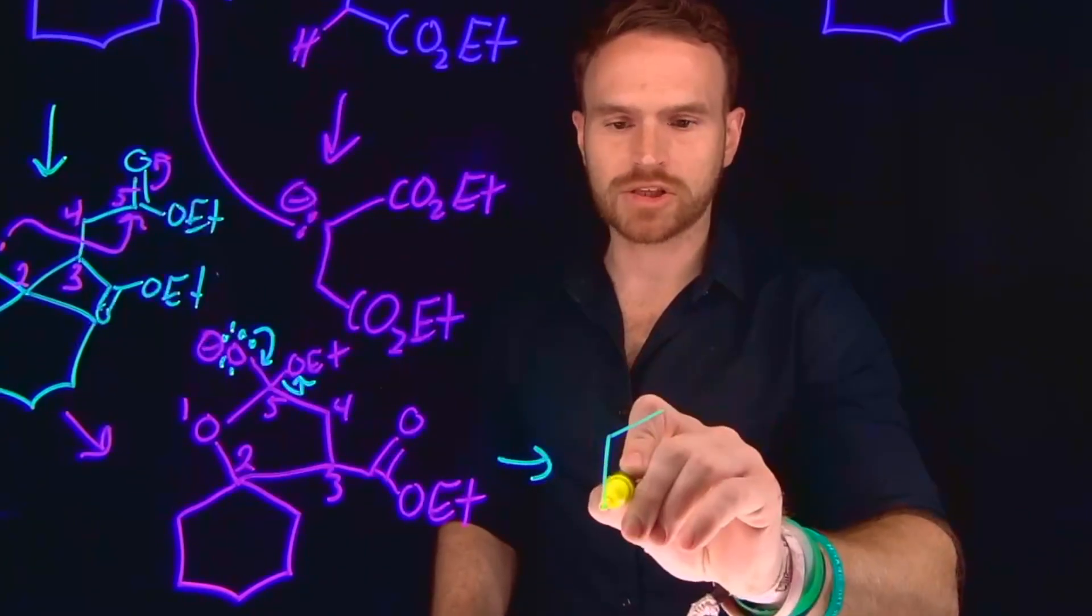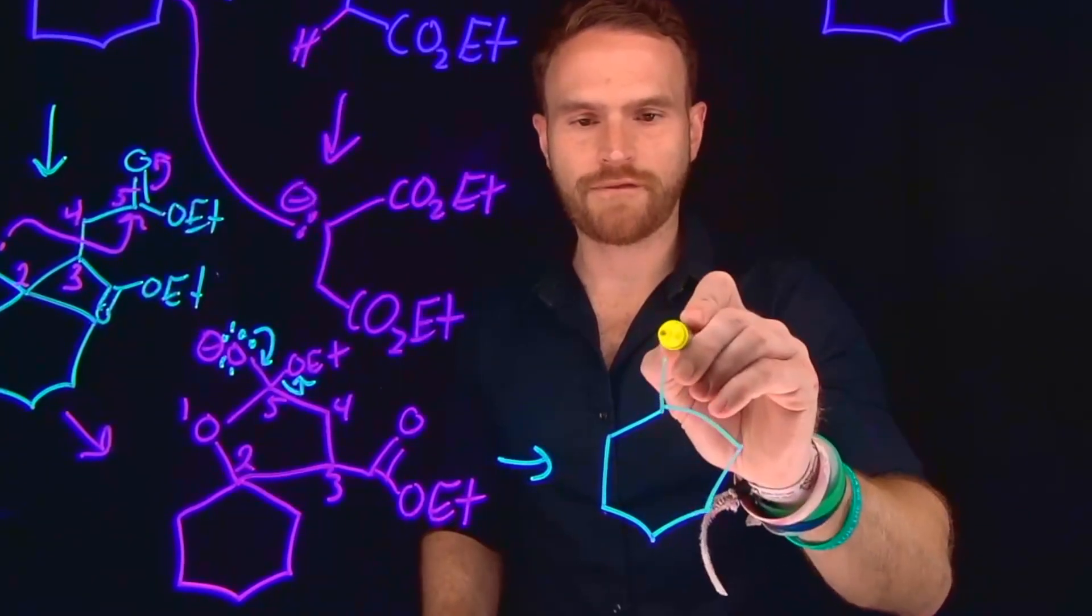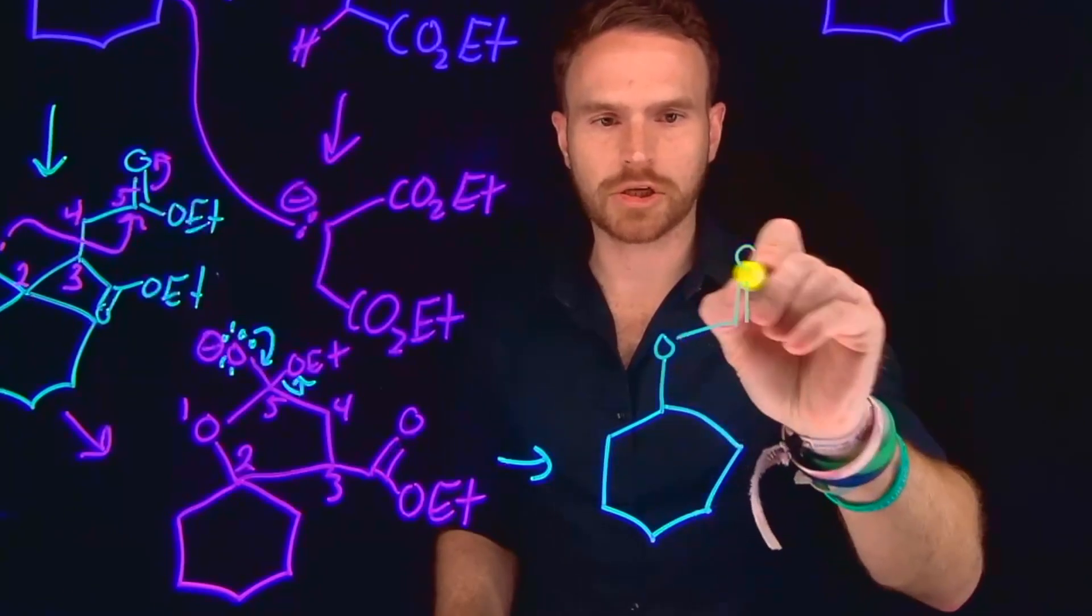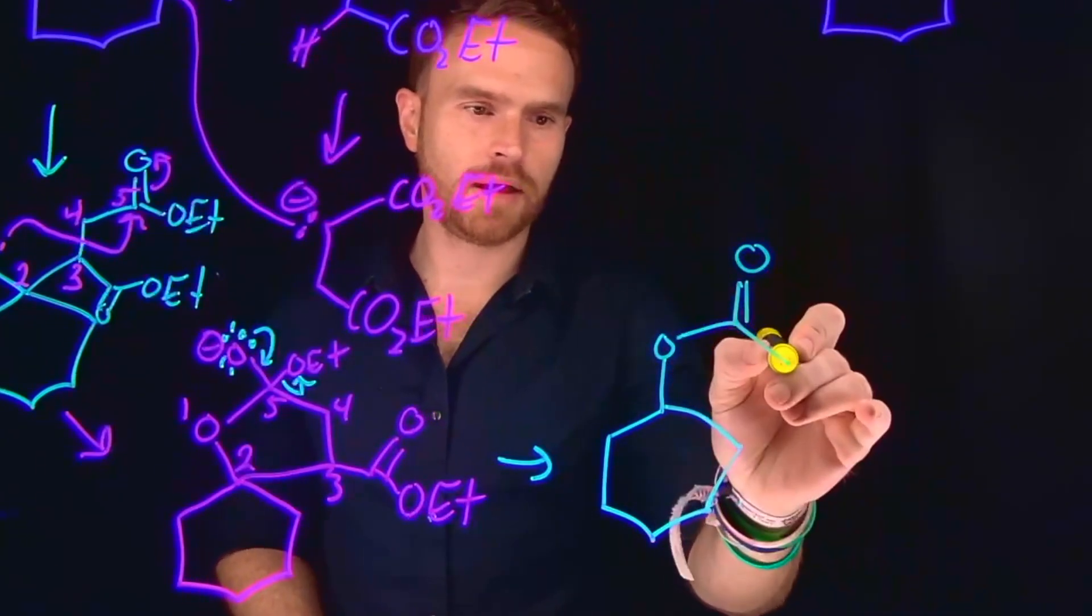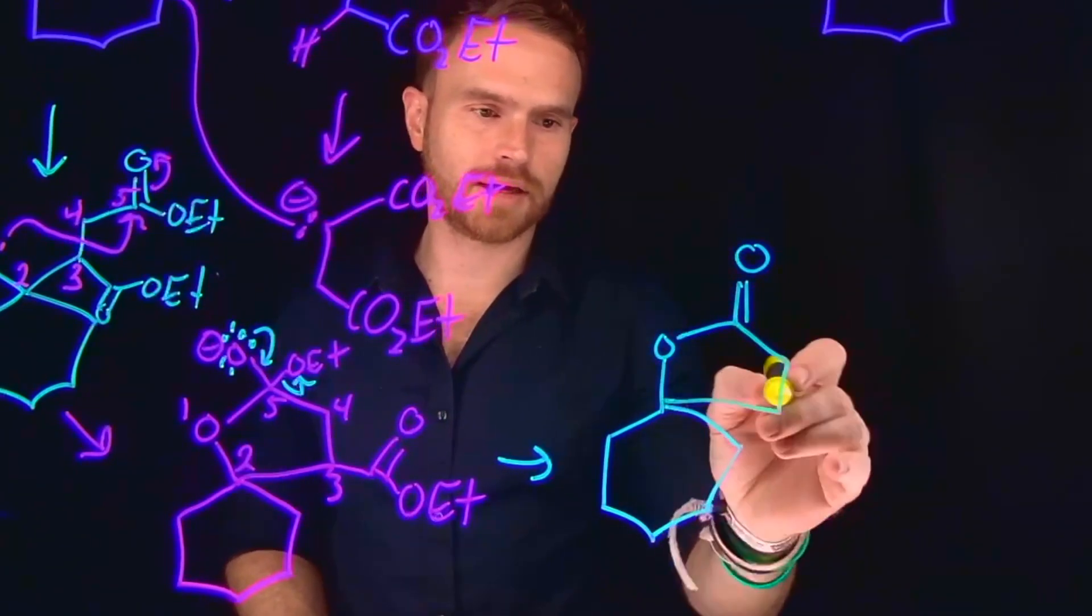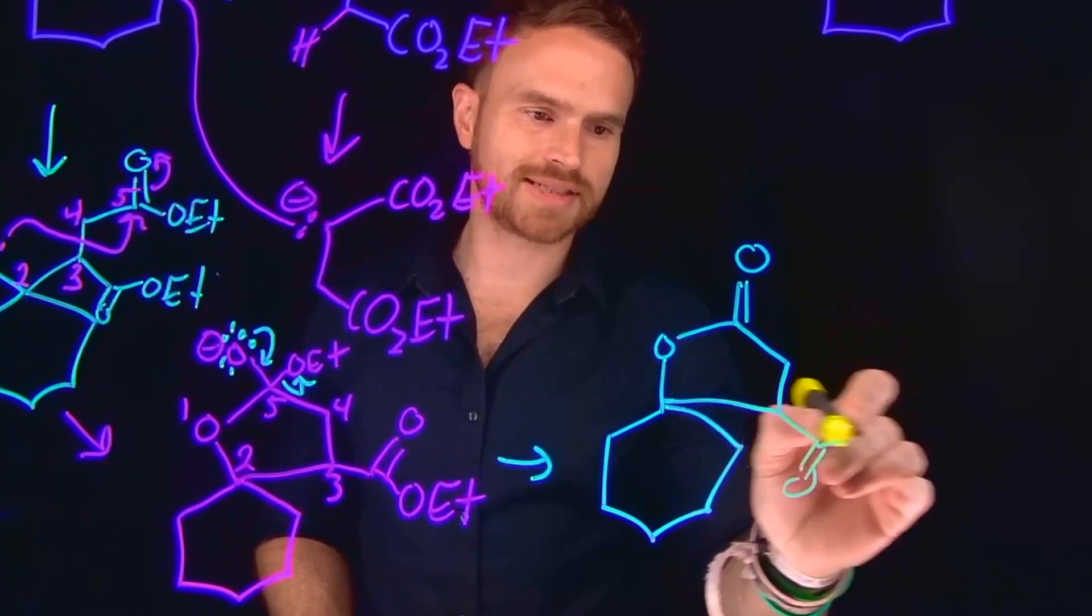The product of this transformation is where we have a new five-membered ring, where at this position you have a carbonyl carbon. Our five-membered ring looks like this, and still coming off this side is where you can find this ester. At this position we still have our ester.